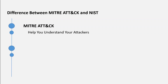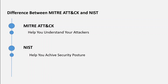MITRE ATT&CK helps you understand who could attack your infrastructure and how to deal with it, whereas NIST enables you to have a better security posture on the basis of best practices. The difference is in the way you deal with the stakeholders. MITRE ATT&CK enables you to look at your infrastructure from your adversaries' perspective and how to counter attack them, whereas NIST gives you a set of best practices and guidelines to have an optimal security posture.